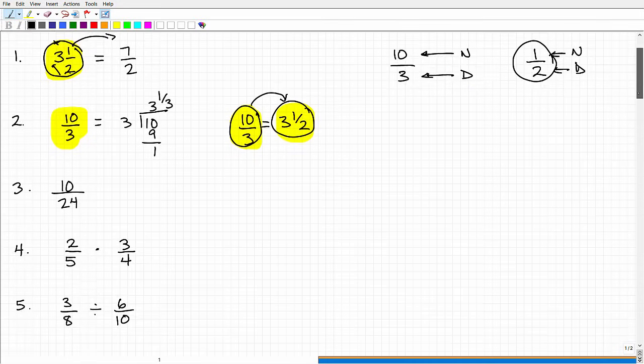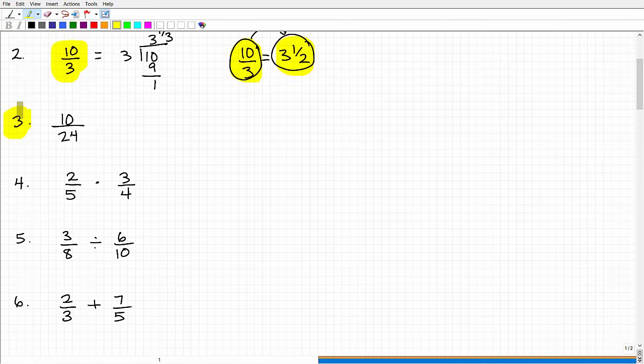In this one, I want to talk about the idea of reducing or simplifying a fraction. Here I have 10 over 24. When you're dealing with fractions, you always want to reduce them or write them in their simplest form. The idea here is to think of a number that goes into both 10 and 24. You might have thought, it's 2. So 2 goes into 10 five times, and 2 goes into 24 twelve times. So this fraction 10 24ths is equivalent to the simpler fraction 5 12ths.